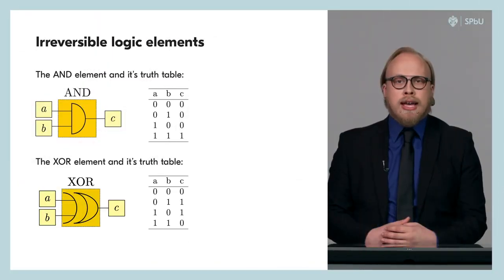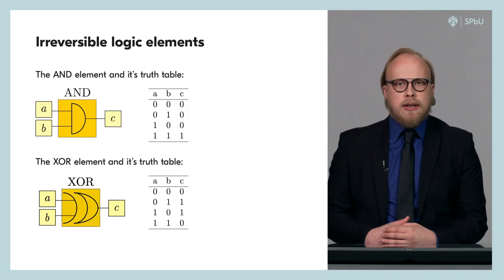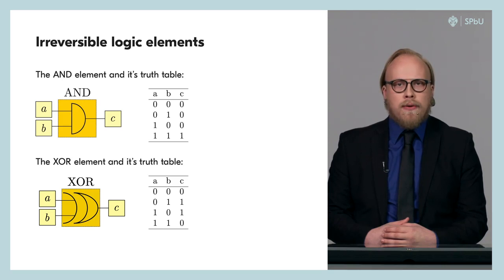On the slide you can see the XOR and AND elements, already familiar to us, along with their corresponding truth tables. These elements, as well as the OR element not shown here, convert bits A and B at the input to bit C at the output. As seen from the truth tables, when bit C for the AND element is 1, we can say with confidence that bits A and B were both equal to 1. However, if bit C is 0, we cannot determine what A and B were, since any of three different situations can correspond to this result. The same applies to XOR and OR.